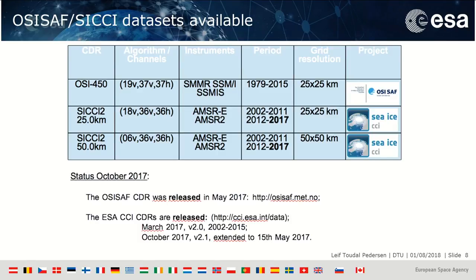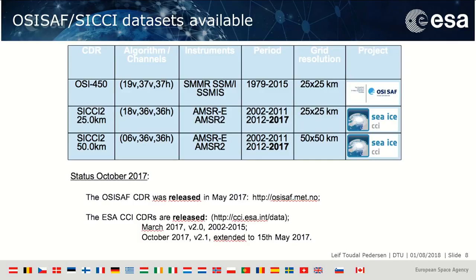The third data set is produced at 50 km resolution and includes the 6 GHz brightness temperature to take advantage of the much lower atmospheric influence at that frequency. All these data sets are available and can be downloaded from either the EUMETSAT or ESA Climate Change Initiative website, with links provided in the presentation.